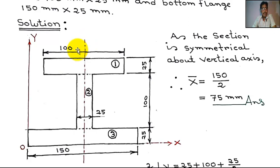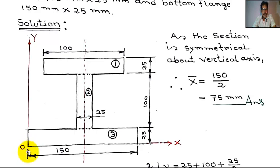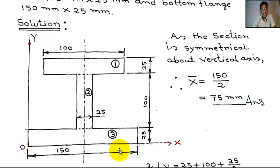So the I-section is symmetrical about the vertical axis OY. If we draw a line parallel to the OX axis, this line does not divide the section into two equal parts. So this section is not symmetrical about the horizontal axis OX.